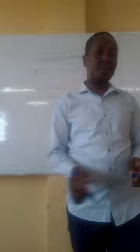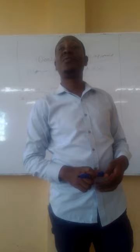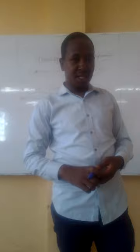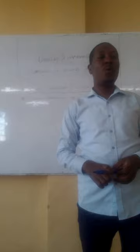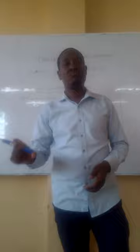Before we begin, we are going to define the following terms. The first term is hazard prevention and control. Hazard prevention and control: these are efforts geared towards protecting workers from workplace hazards — that is, to help avoid injuries, illness, incidents, minimize and eliminate safety and health risks, and help provide workers with safe and healthy working conditions.